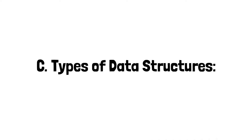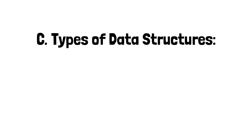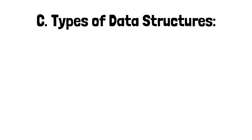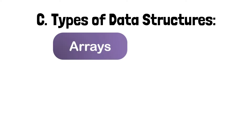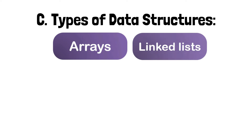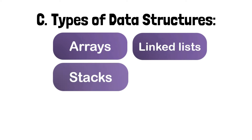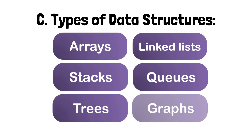Types of Data Structures. There are several types of data structures, including arrays, linked lists, stacks, queues, trees, and graphs. Each data structure has its own strengths and weaknesses and is best suited for specific types of problems.